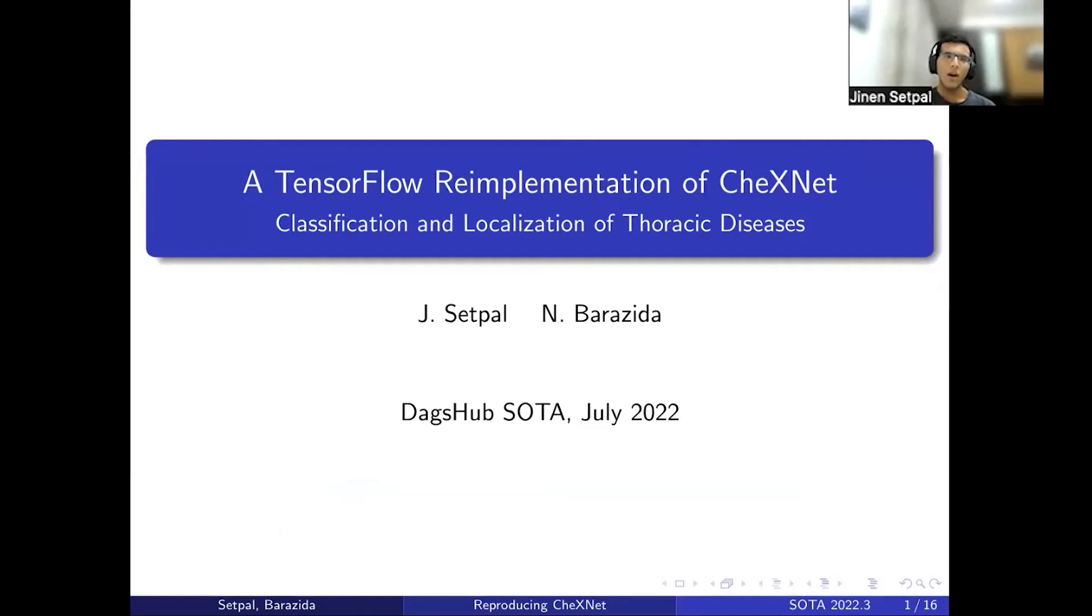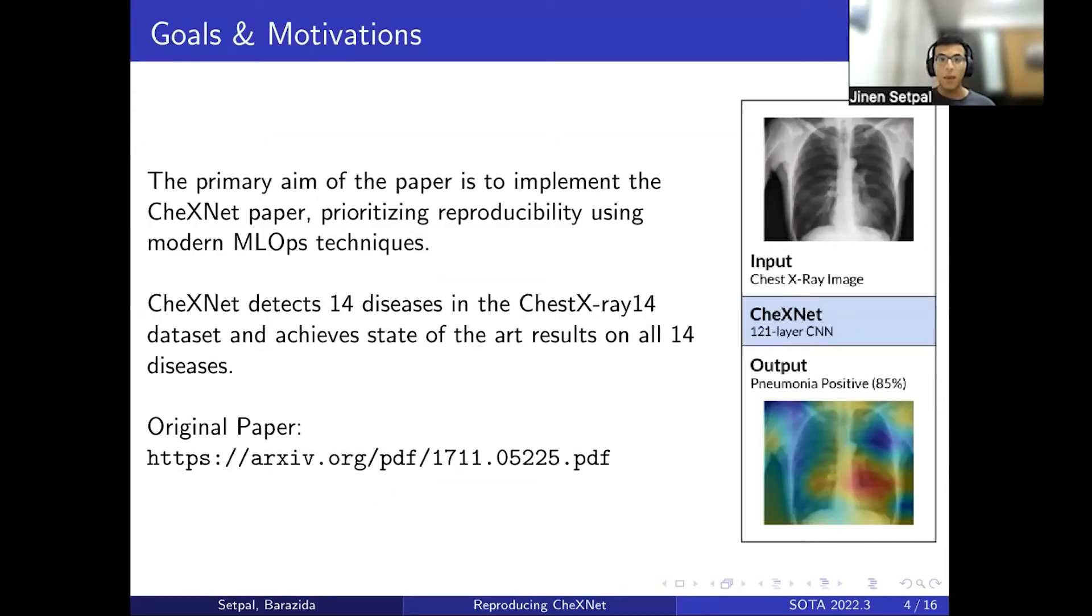Today I'm going to be talking about the TensorFlow implementation of the paper ChexNet. ChexNet is a paper that works to classify and localize 14 different thoracic diseases based on the Chest X-ray 14 dataset. It's a 45 gigabyte dataset with around 800,000 images of three scans each per patient, along with labels for the pathologies they have, for instance pneumonia, cardiomegaly, and 12 others.